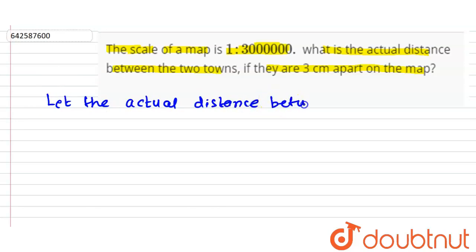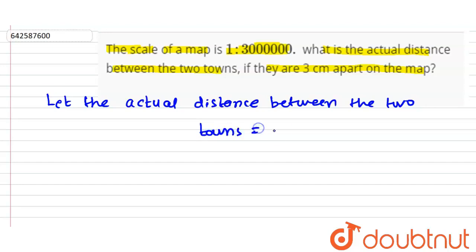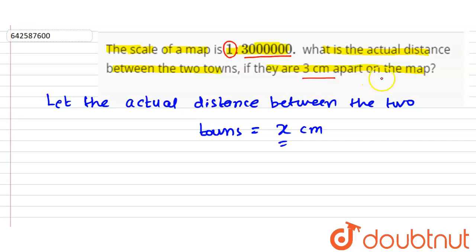Suppose we let the actual distance between the two towns be equal to x centimeters. Now, on the map, 30 lakh centimeters is represented by 1 centimeter.